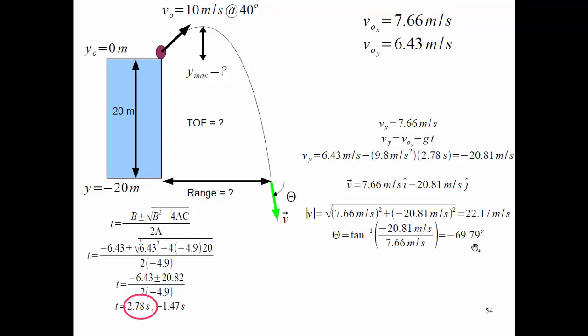Writing in i-j notation: the X component times i and the Y component times j. Taking the square root of the sum of the squares gives the magnitude of the final velocity, and using inverse tangent of the Y component over the X component gives the angle. Note that this time the final velocity does not equal the initial velocity — potential energy became kinetic energy.